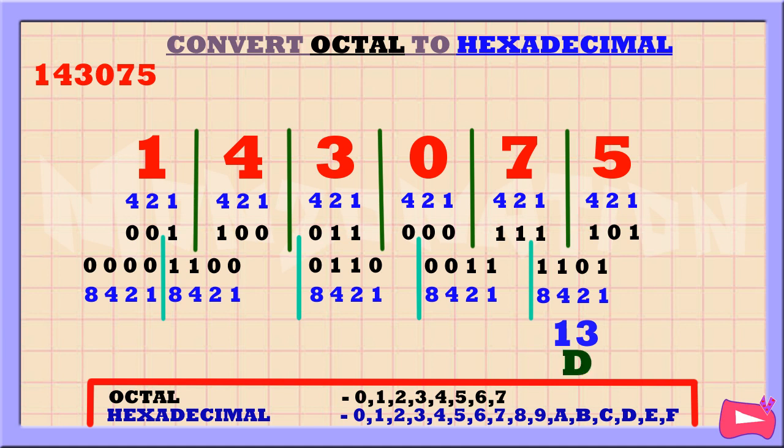Next group: 2 plus 1 is 3. Third group: 4 plus 2 is 6. Last group: 8 plus 4 is 12. The hexadecimal equivalent of 12 is C.